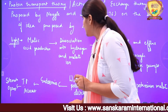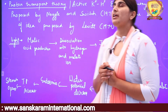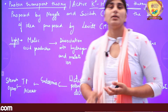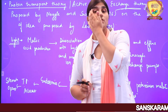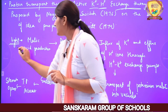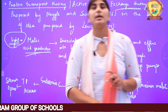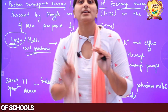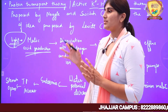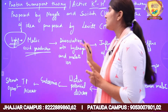अब जो most accepted theory है उसका नाम है Proton Transport Theory, या Active Potassium Ion and H+ Ion Exchange Theory। यह क्या कहती है? जब भी light होती है, during light, guard cells के अंदर malic acid की production होती है। यह malic acid की production कैसे होती है — जब photosynthesis chapter में पढ़ेंगे तो बताऊंगी कि CO2 से malic acid कैसे produce होता है। इतना याद रखो — जब भी light होगी, malic acid की production होगी।